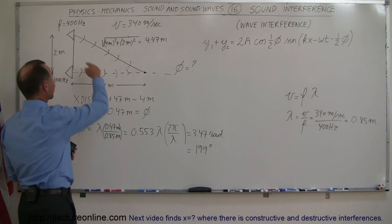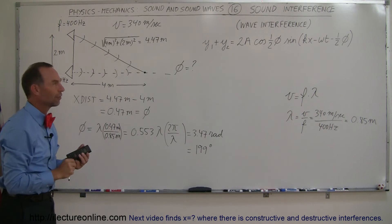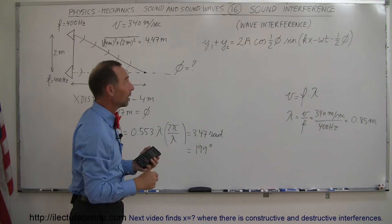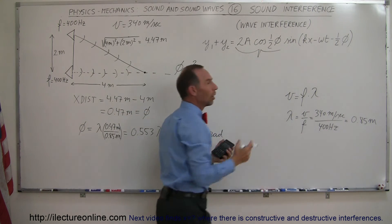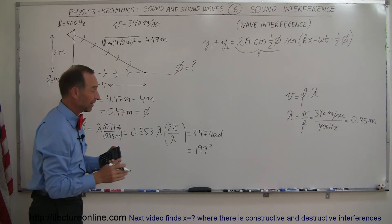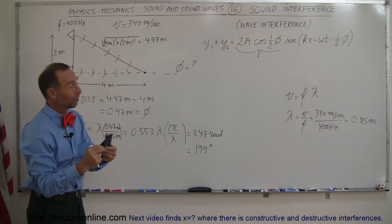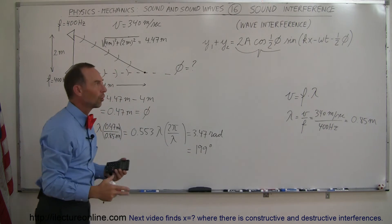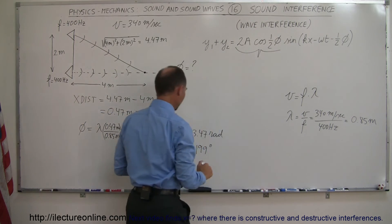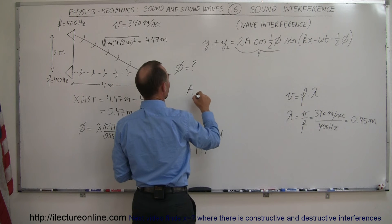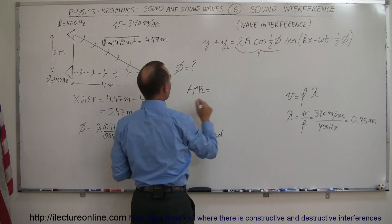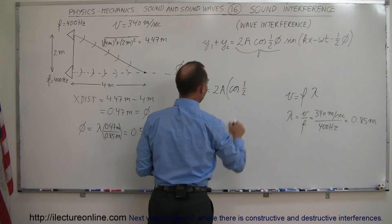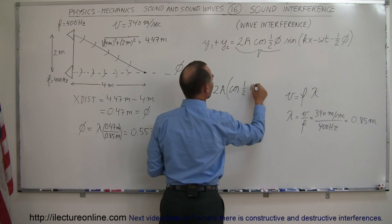Now we know the phase difference is 199 degrees. Using the interference amplitude equation — which applies to sound waves just as it does for strings — the amplitude when two waves meet equals 2 times the amplitude of a single wave times the cosine of half the phase difference. When they're half a wavelength out of phase the amplitude is zero; when exactly in phase it's twice the single amplitude. So we take the cosine of one-half of 199 degrees.